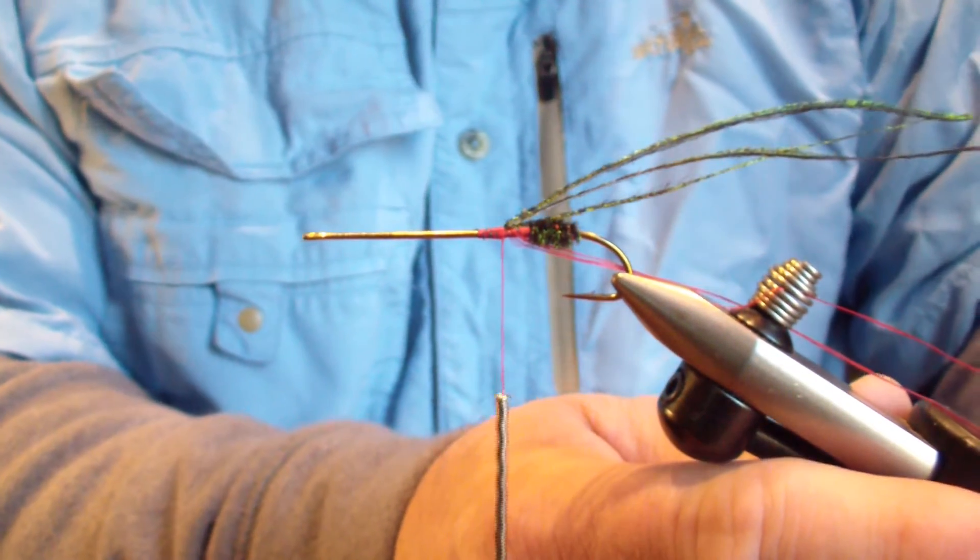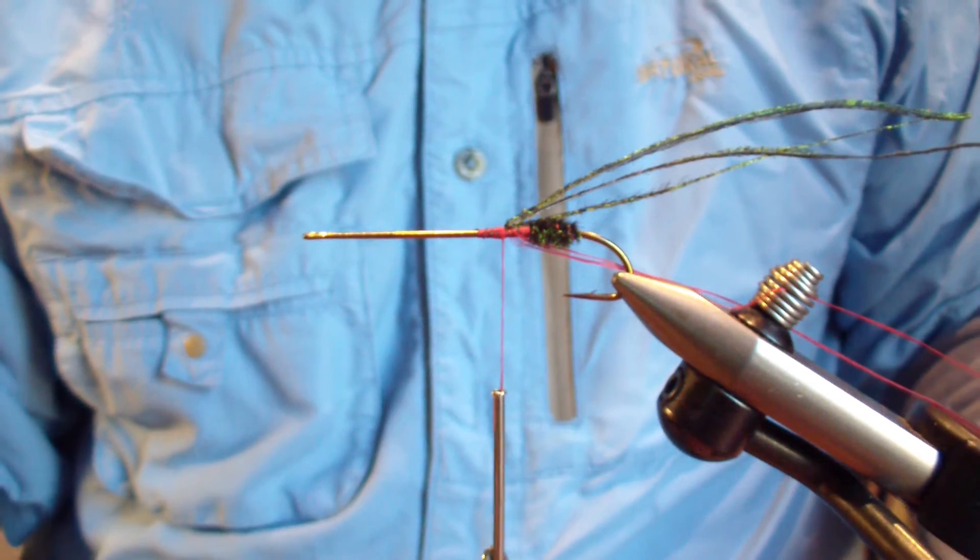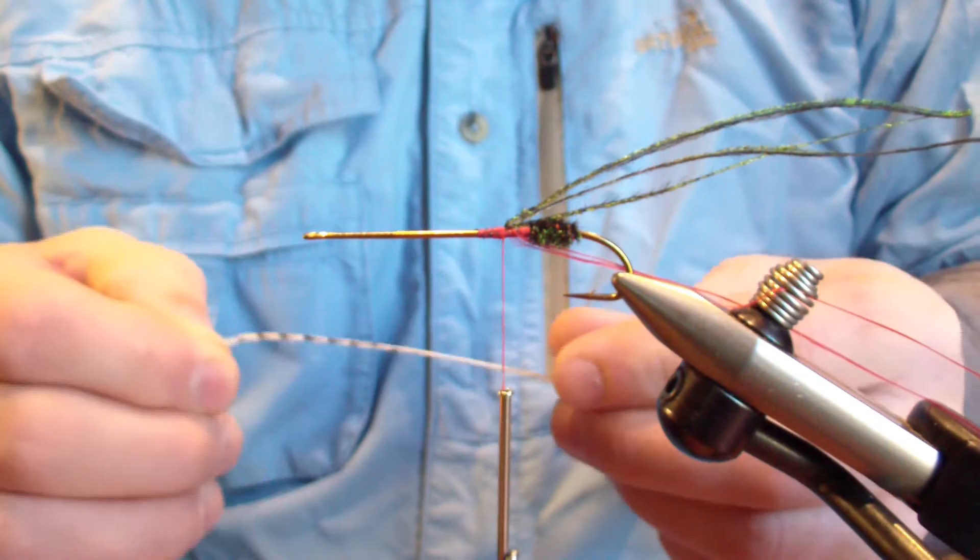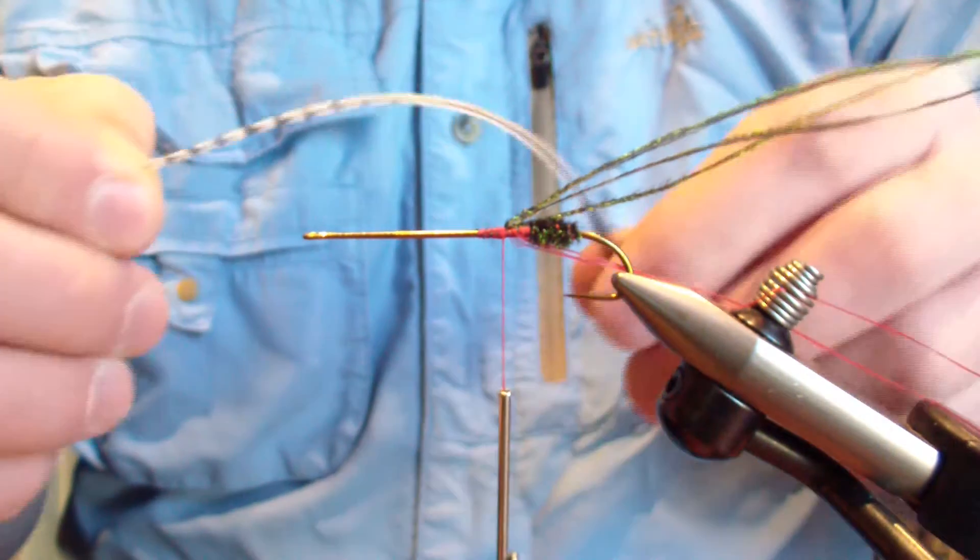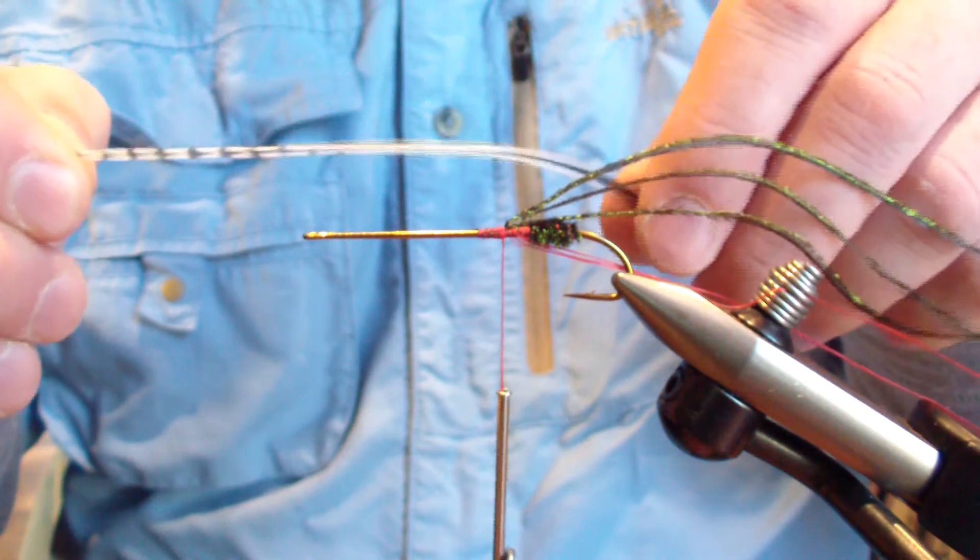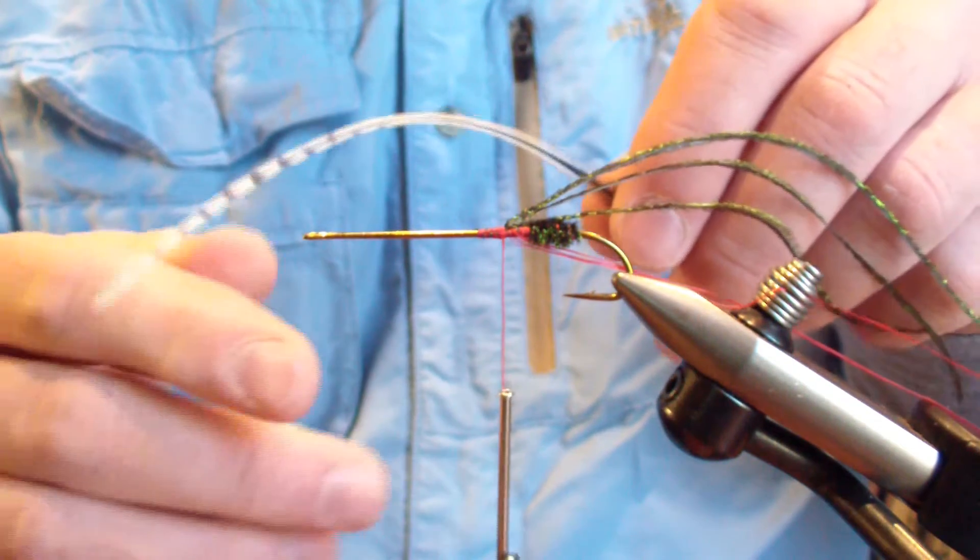Tighten my vise down a little bit there. And then next I'm going to tie in the third piece of enhancement which is two undersized dry fly hackle.